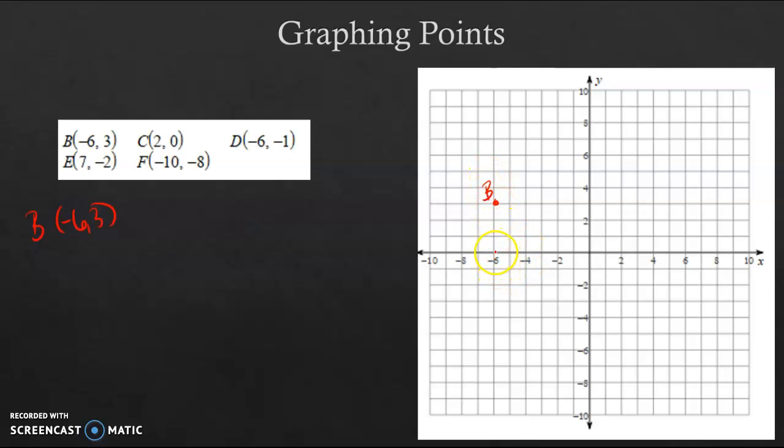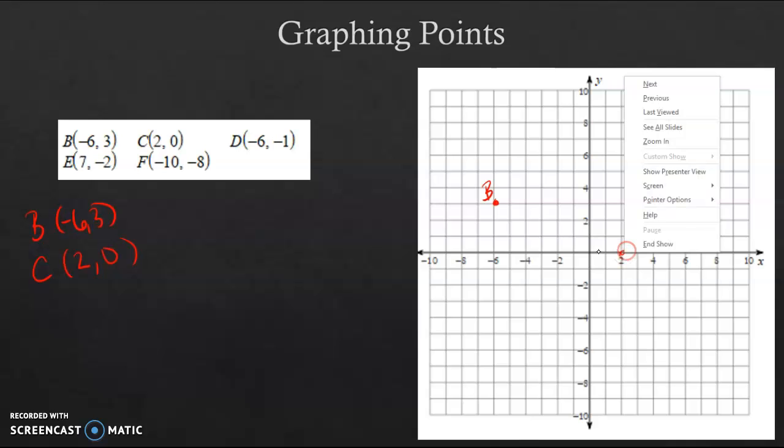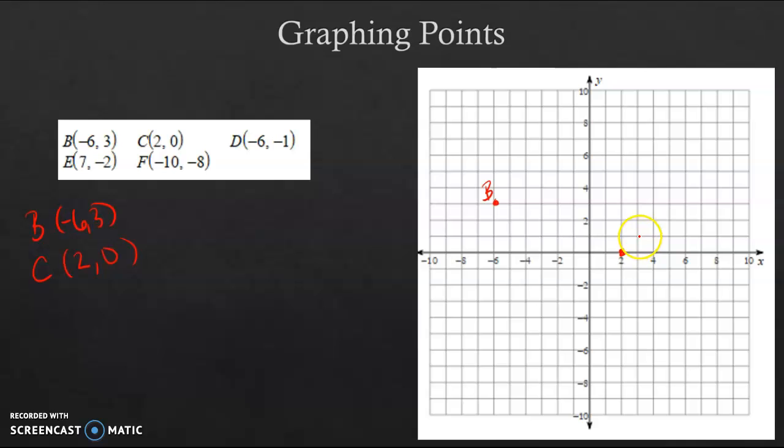And if we look for C, C is going to be graphed at (2, 0). So I'm going to go right 2 because x value is left or right. And then it tells me to go nowhere for my y. So this point is located on the x-axis. And that was C.